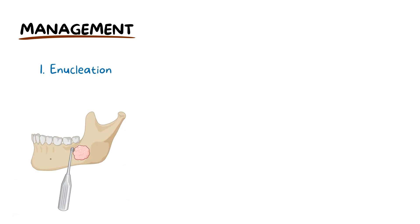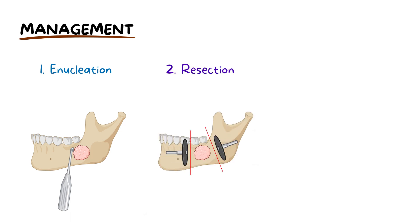When managing ameloblastoma, our primary line of action is surgical. Enucleation targets smaller lesions, removing the tumour along with a sliver of surrounding healthy tissue. For larger or aggressive tumours, resection is the go-to approach, which might entail removing a portion of the jawbone, sometimes followed by reconstructive grafting.